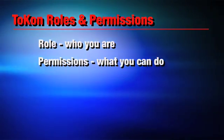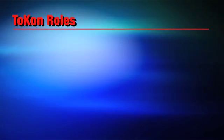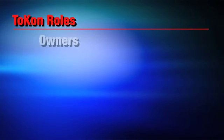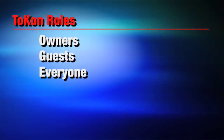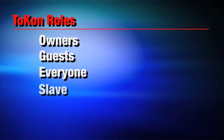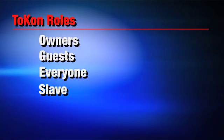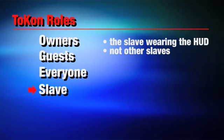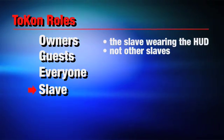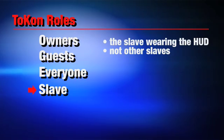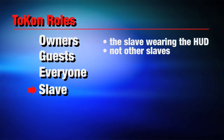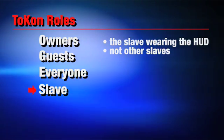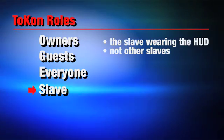Let's talk about the roles first. There are four roles: owners, guests, everyone else, and the slave. The slave is the easiest role to understand — they're the ones who are being controlled. It's important to note that other slaves don't fall into this category; the role is reserved specifically for the individual slave wearing the HUD.